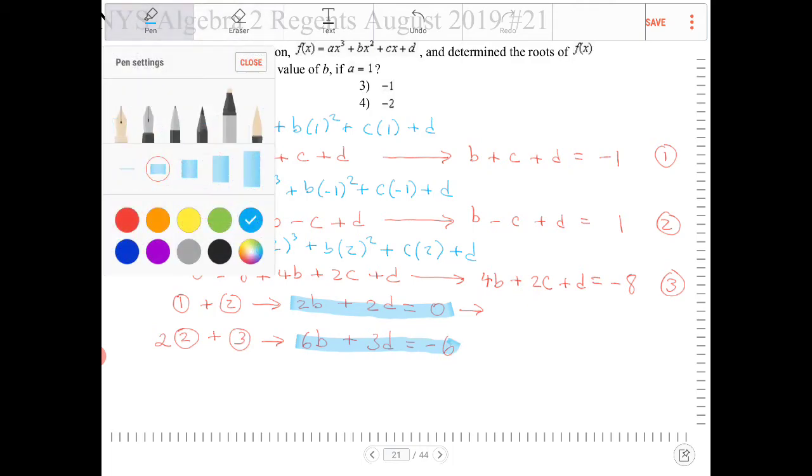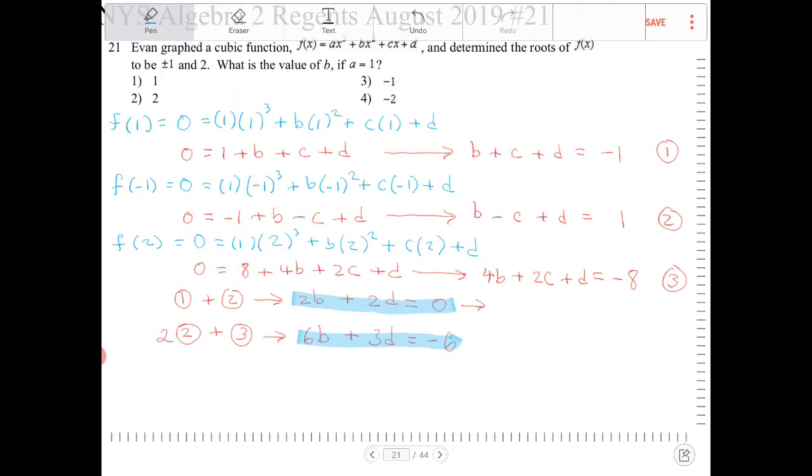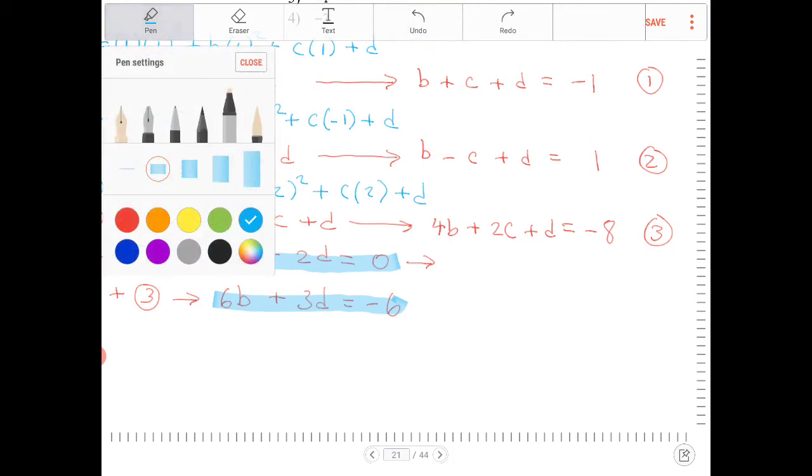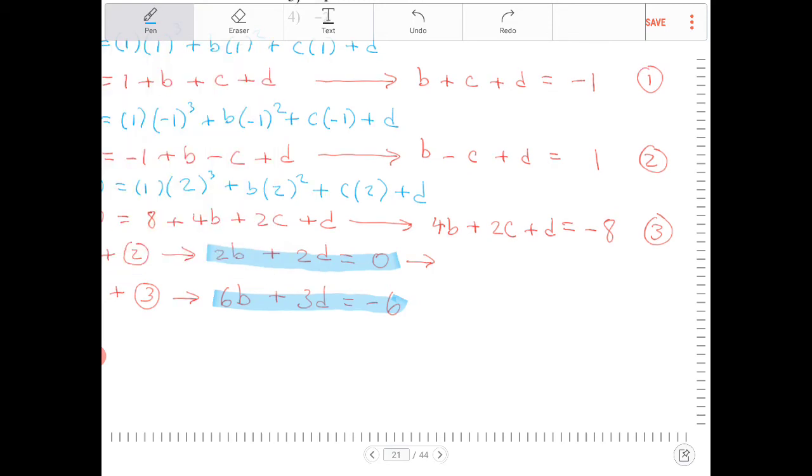Now, what I'm going to do is divide both sides by 2, in that first equation that I highlighted, which will turn into b plus d equals 0. The second equation, I'm going to divide both sides by 3, so it'll turn into 2b plus d equals negative 2.